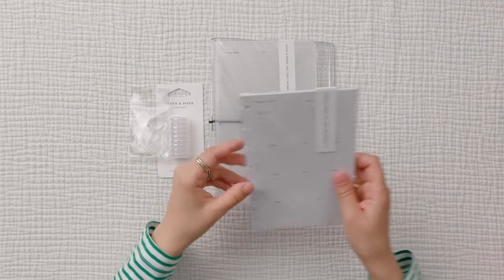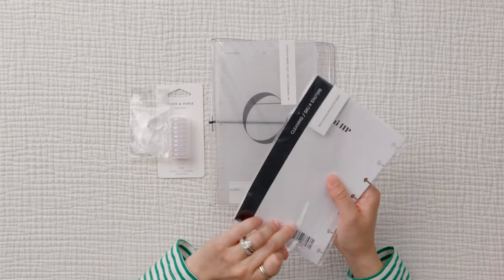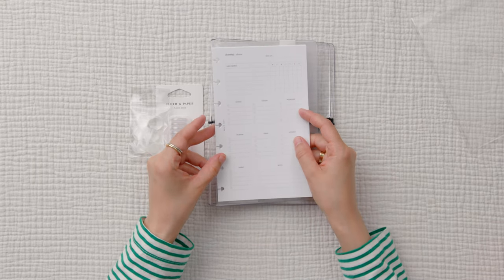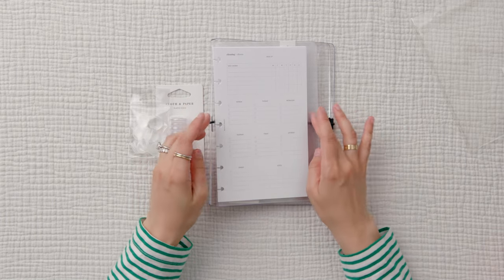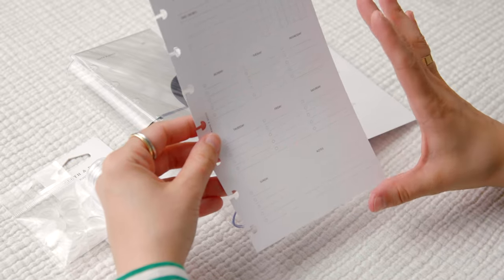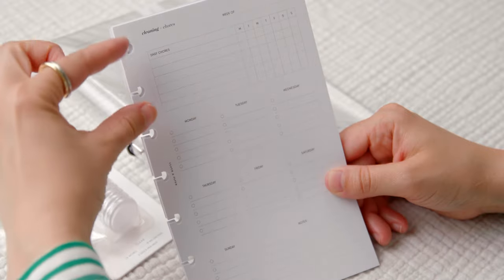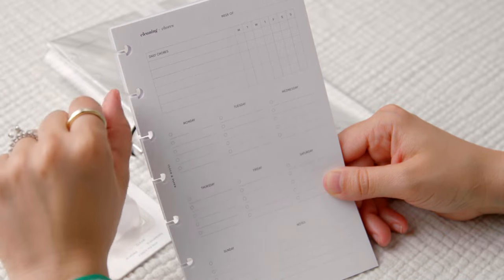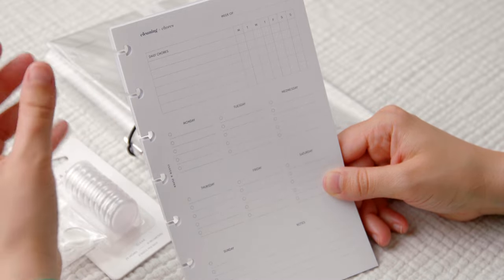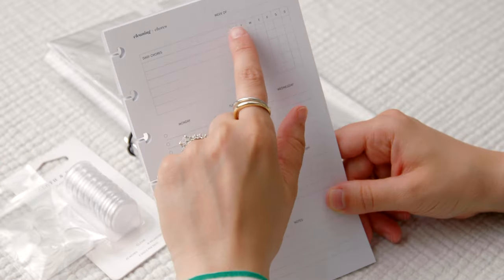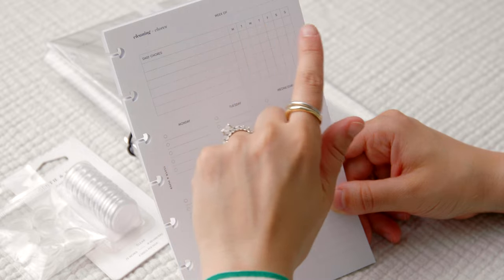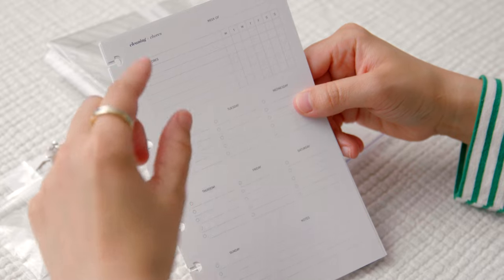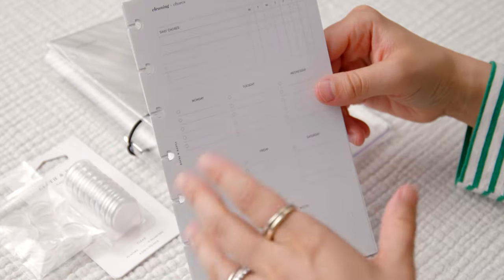And then I also snagged these cleaning inserts, which this was part of cloth and paper's final last call sale. So I got these for really cheap. I got them in the size HP mini because I plan on possibly using this for 2024. This is like a weekly overview of your chores. At the very top, you have the week of, then you have a section here for your daily chores. That would be things like cleaning the kitchen after eating, cleaning up Shelby's toys, stuff that I do every day. I would list that here, and then over to the right is seven columns, the seven days of the week.